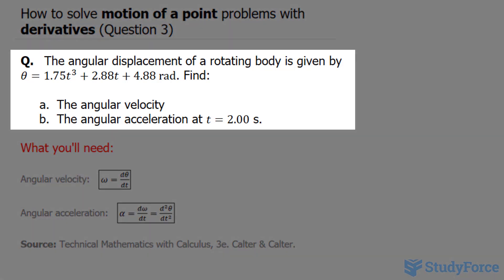The question reads: the angular displacement of a rotating body is given by the equation θ = 1.75t³ + 2.88t + 4.88, and the units are in radians.